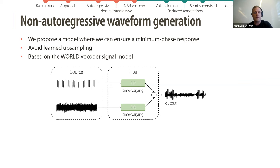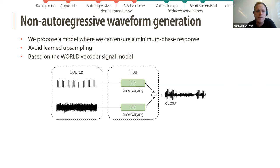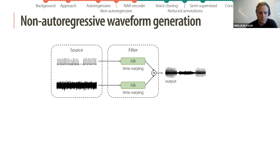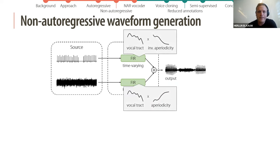The model is based on the WORLD vocoder signal model: we have a harmonic source and a periodic source, then two time-varying filters, and these two signals are summed to produce the output waveform. The filters are a combination of a vocal tract filter and a periodicity filter — the aperiodic filter is basically an interpolation between the harmonic signal and the periodic signal.